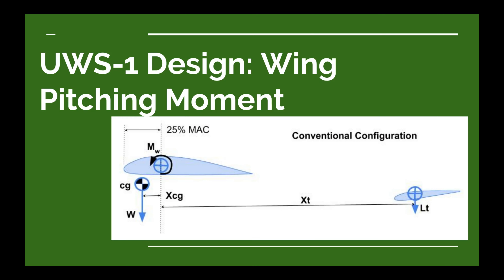We want to figure out what the moment is on the main wing of the UWS-1. On this diagram on our title page, this curved arrow is representing the moment of our main wing. The moment is essentially a pitch-up or pitch-down rotation of our main wing because of aerodynamic forces on that wing.